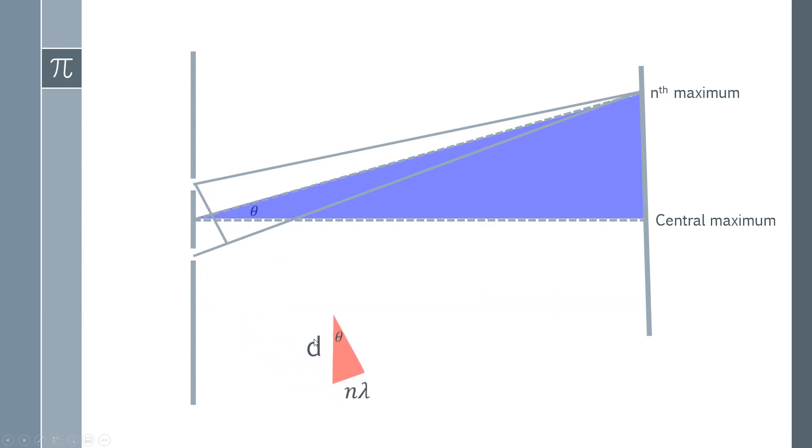What we can now do is just extract this little triangle here. We've got d on one side, n lambda on this side, and we've got theta. We can use basic trigonometry if we think about the definition of sine. Sine is your opposite over your hypotenuse. Your opposite is going to be the n lambda, and your hypotenuse in this case is d. Think about the right angle. The right angle is in here, so d is going to be opposite the right angle, making it the hypotenuse. And then by simply rearranging this equation, you end up with d sine theta equals n lambda.